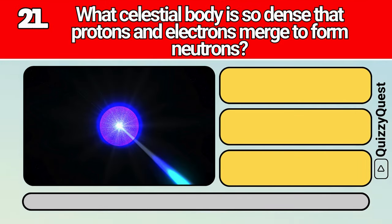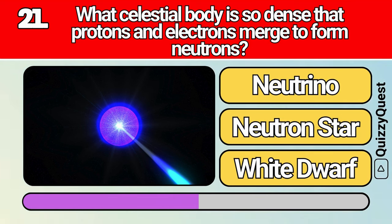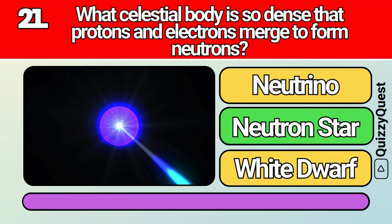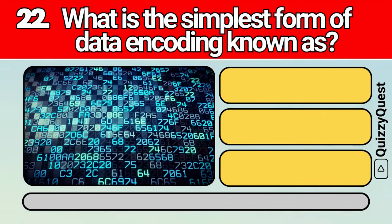What celestial body is so dense that protons and electrons merge to form neutrons? What is the simplest form of data encoding known as?